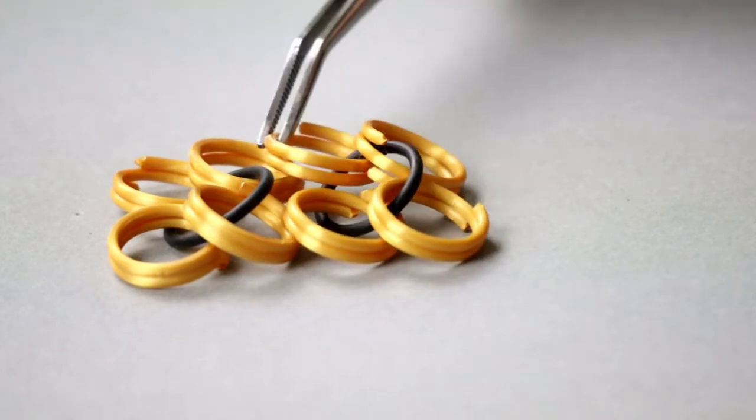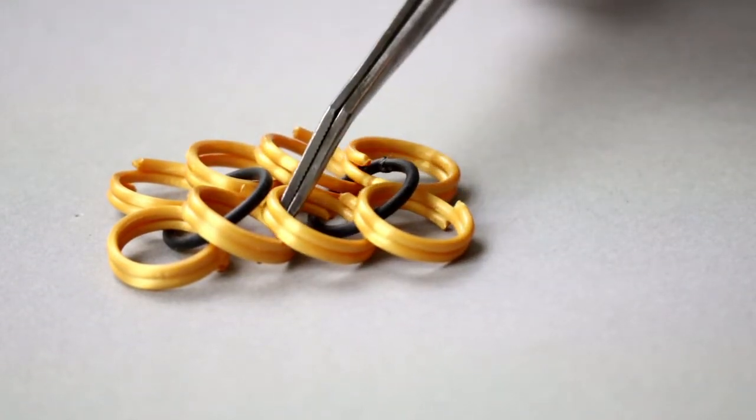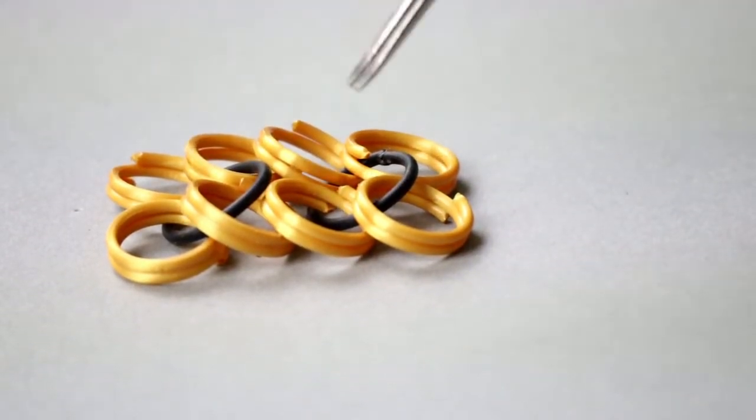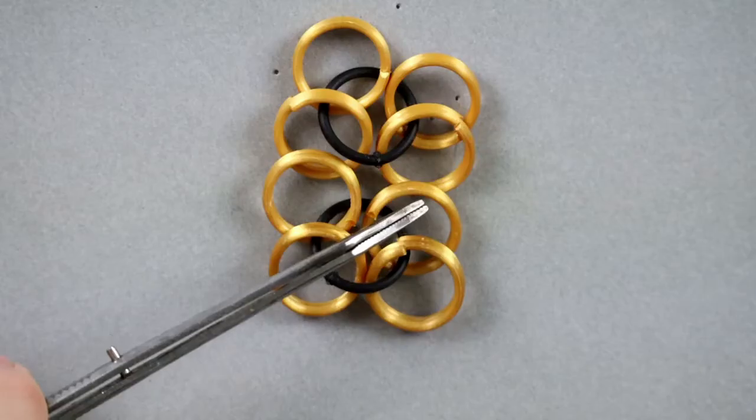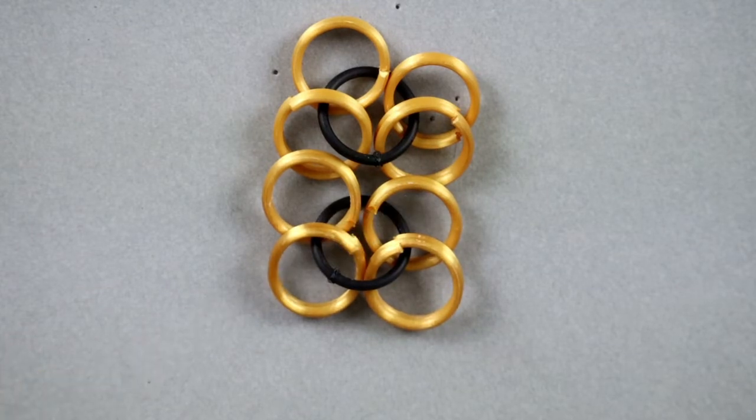Here is the side view so you can see how they lay on top of each other like shingles. The high points of the gold rings pointing away from me and the high points of the black ones towards me.